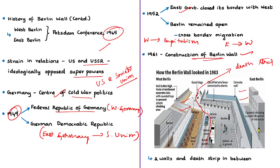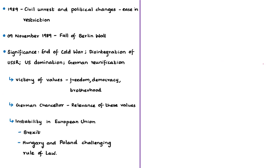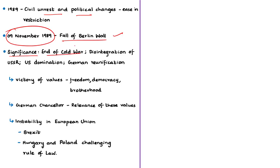Due to civil unrest and political changes in 1989, the East German government had to loosen some of its regulations on cross-border movement. Following media reports that the borders were to be opened, crowds gathered on both sides, followed by peaceful demonstrations, cross-border movement, and finally the demolition of the wall on 9th November 1989. Politically, this marked the end of the Cold War, led to the disintegration of the USSR, and almost a year later Germany was reunited in 1990.